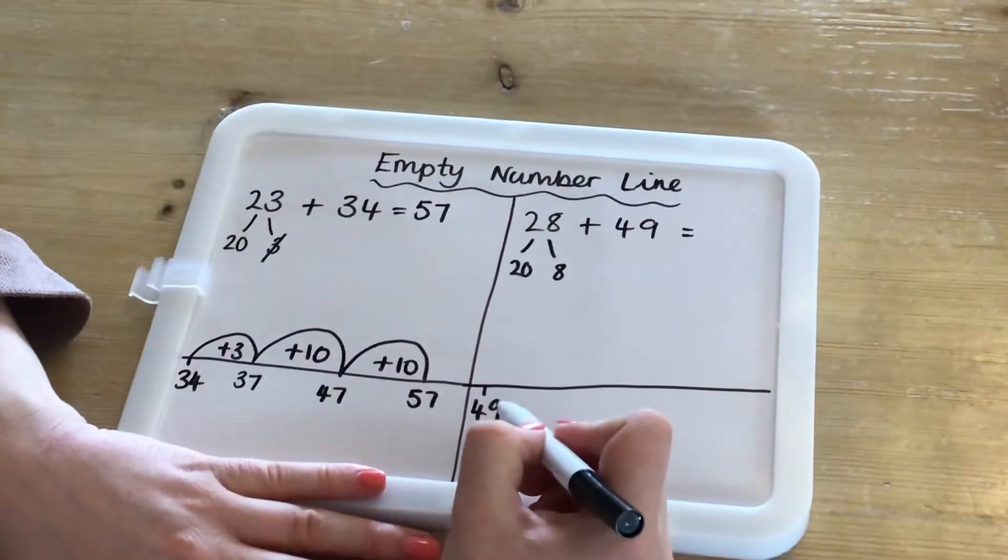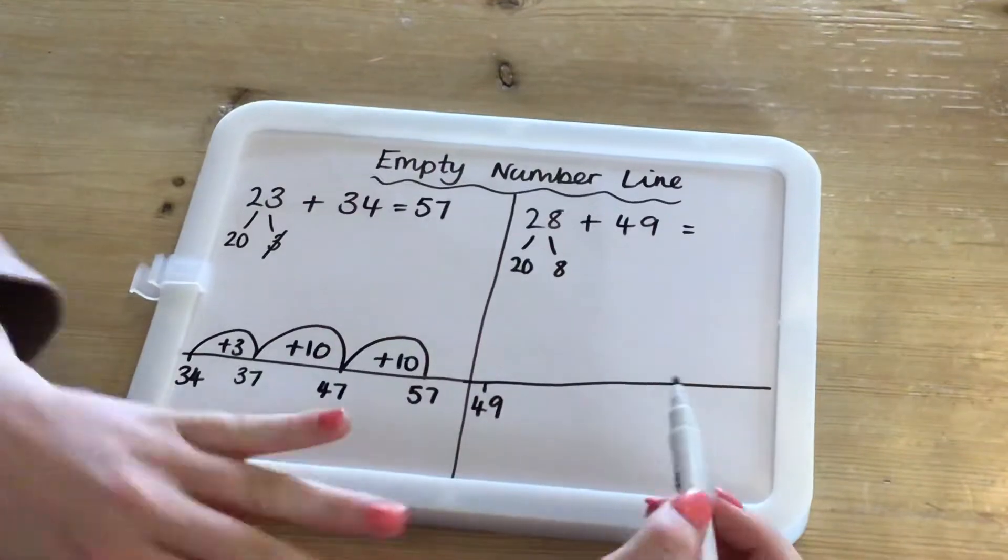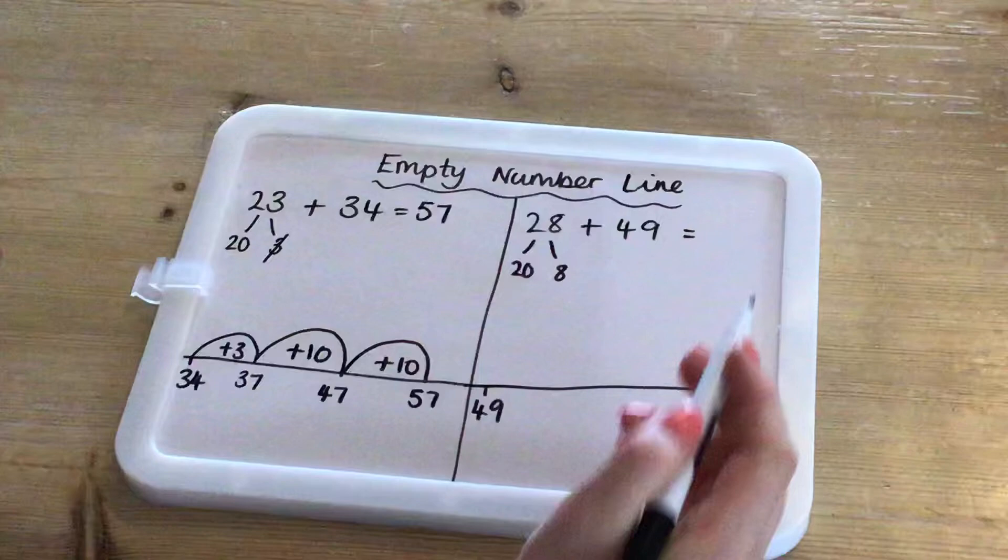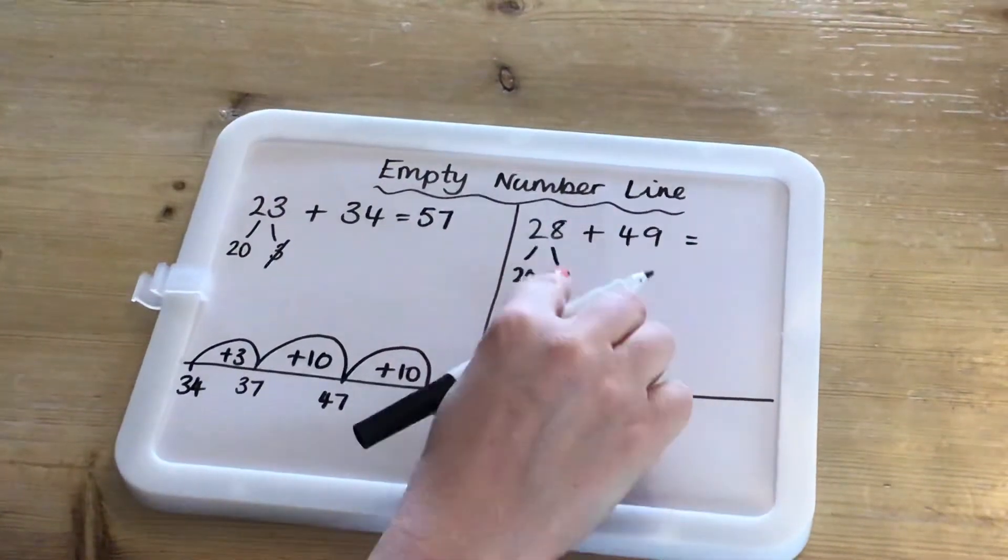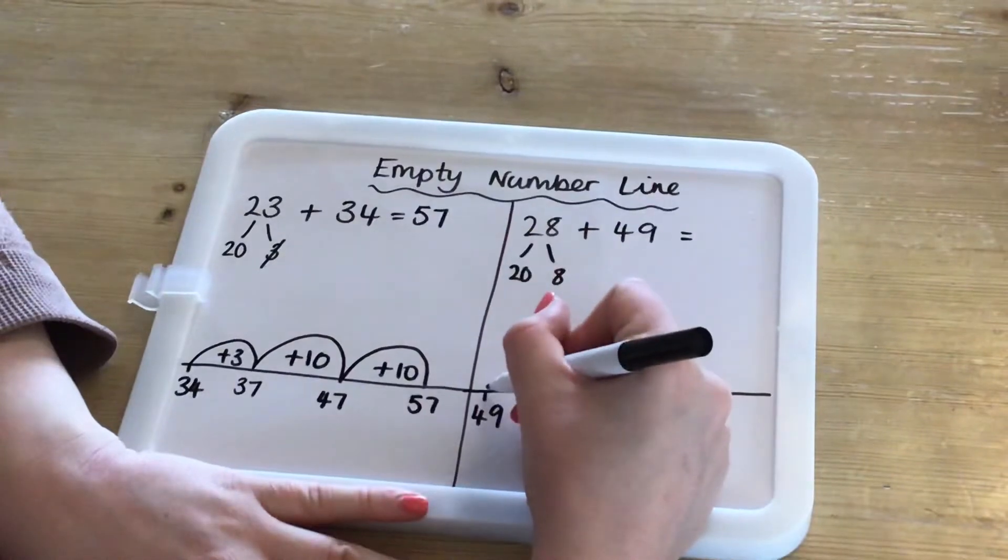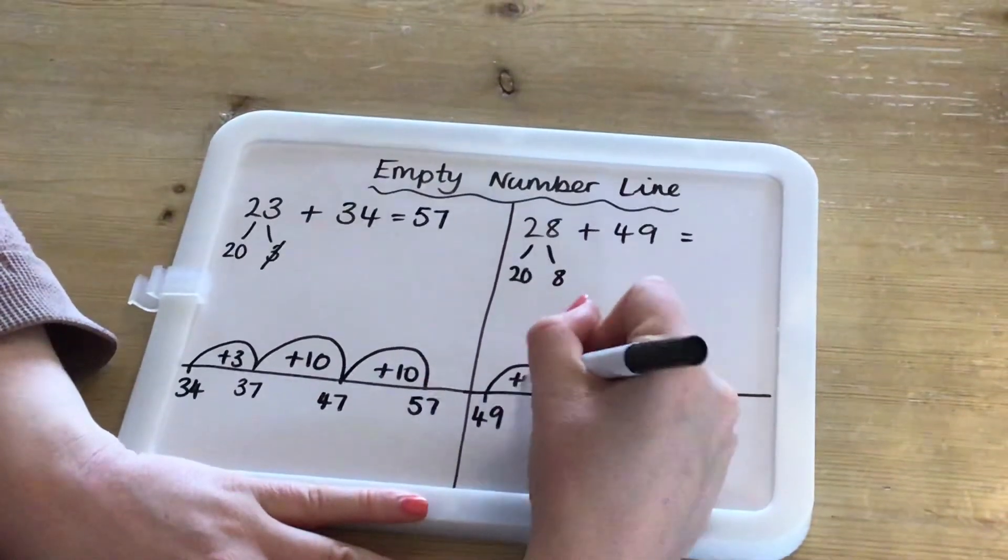So, you are going to add your ones first. But what we need to remember when we're bridging a 10, because it's going to go over the threshold of 50, is we're going to split the 8 into two parts so that we can do that mentally. So, to get to 50, I'm going to add 1.